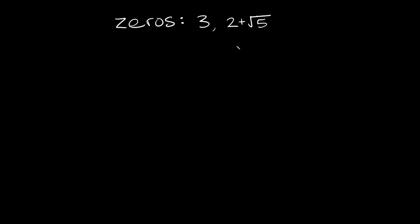So here with this problem we're given that the zeros are three and two plus the square root of five. There's something called the irrational conjugates theorem that says if a plus the square root of b is a zero, then so is a minus the square root of b. So here, two plus the square root of five is a zero, which means two minus the square root of five is also a zero.